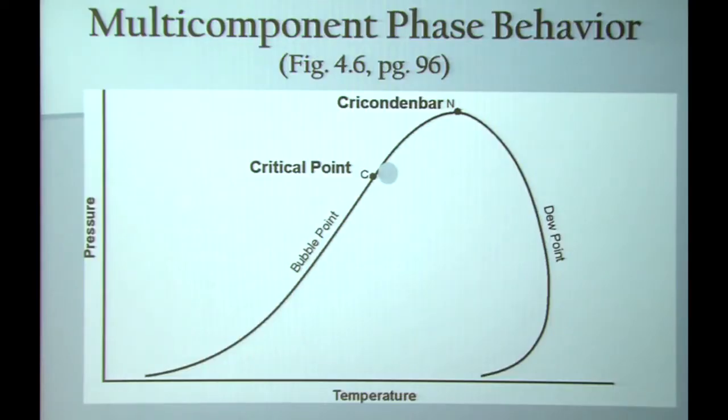Continuing with the analysis of the phase envelope, we have a point on the phase envelope called a cricondenbar. The cricondenbar is the highest pressure at which two phases can exist. The cricondentherm is the highest temperature at which two phases can exist. You can draw a vertical tangent at the phase envelope to indicate the cricondentherm. You can draw a horizontal tangent on the phase envelope to indicate where the cricondenbar is.